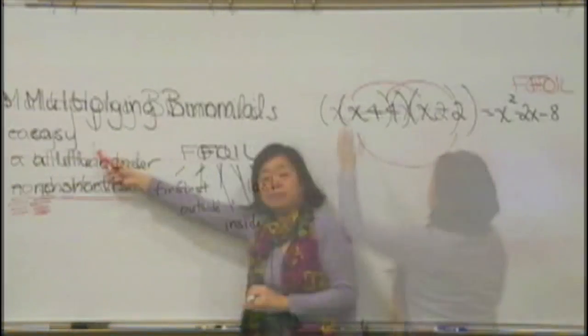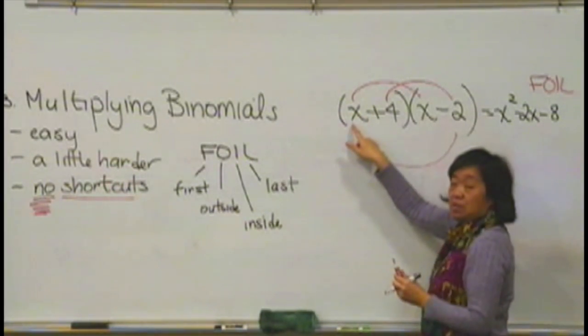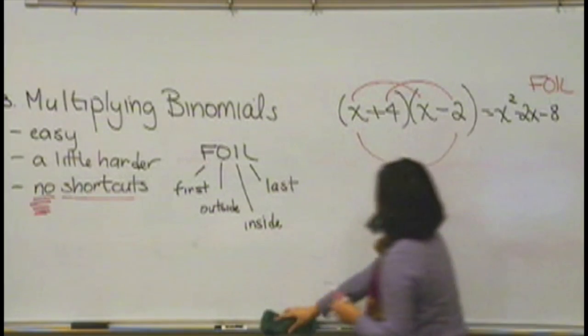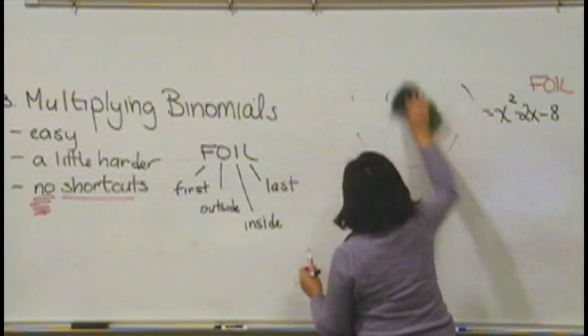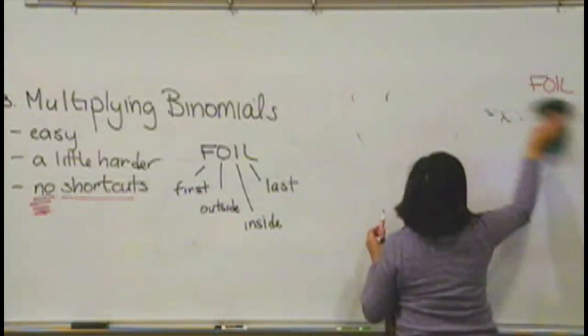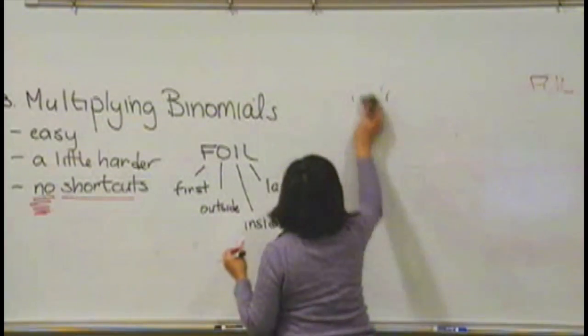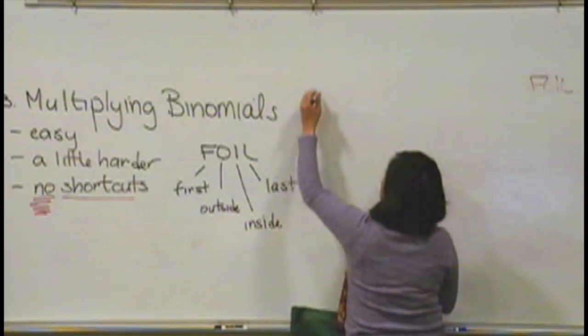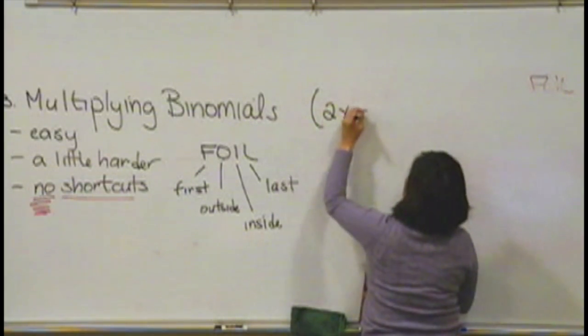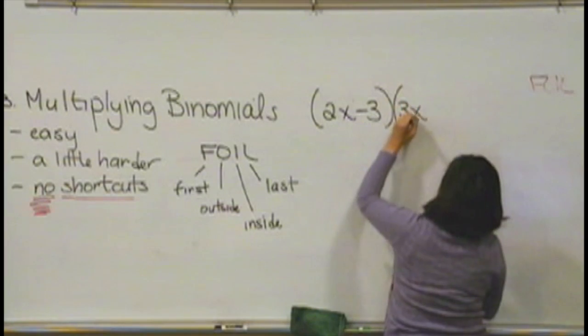So, for example, I want to do one that's a little harder with you, one where we might have a number here in front of the X, just to make sure that that won't hang you up in any way. So, what if we had something like 2x minus 3 times 3x plus 2?